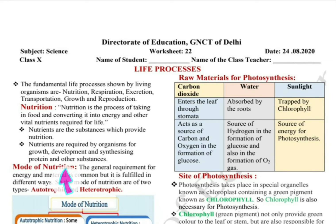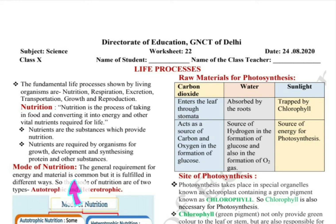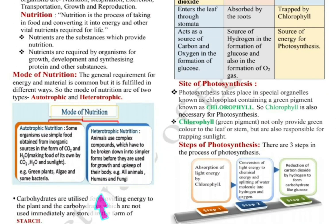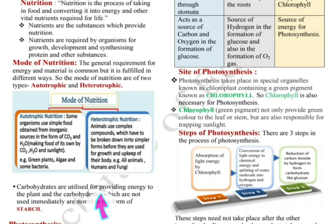Next is mode of nutrition. The general requirement for energy and material is common, but it is fulfilled in different ways. The mode of nutrition is of two types: autotrophic and heterotrophic. Mode of nutrition refers to how organisms take in food or nutrients into their body.